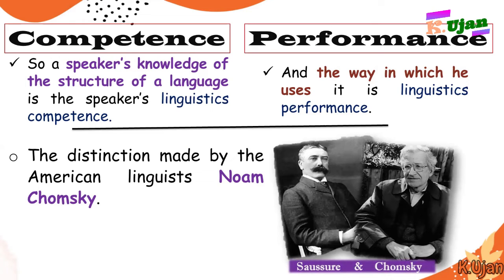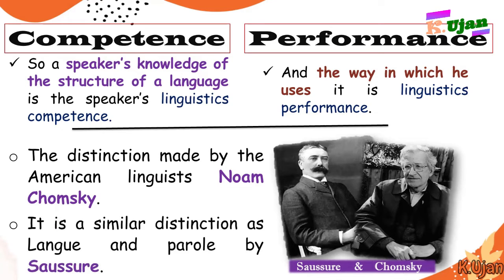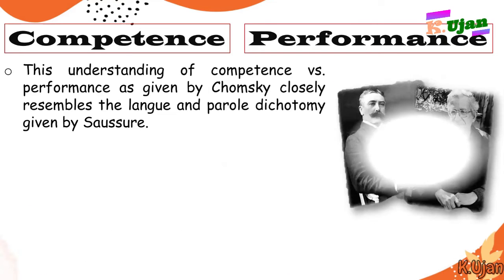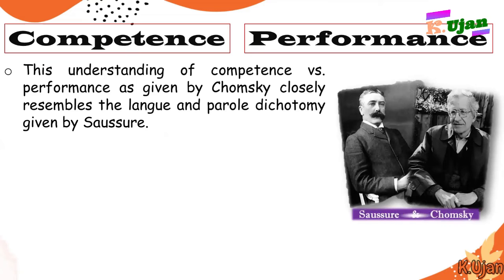Besides Chomsky, there is also Saussure. We have already learned about this in our previous lecture series. It was noted that there is a similar distinction — langue and parole — by Saussure. We already have learned about langue and parole, and the differences between these two approaches are equally the same as competence and performance. Chomsky's competence versus performance closely resembles the langue and parole dichotomy given by Saussure.